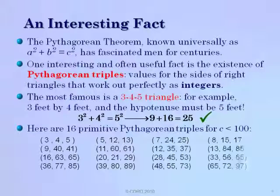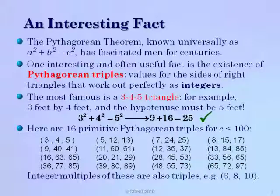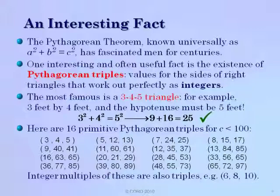There are actually quite a few Pythagorean triples. Here are 16 primitive Pythagorean triples with C values under 100. There are also integer multiples of each of these which are also triples but not considered primitive. For example, 3, 4, 5 is a primitive Pythagorean triple, but multiplying each by 2 gives 6, 8, 10, which is also a Pythagorean triple. There are lots of Pythagorean triples even under C less than 100.